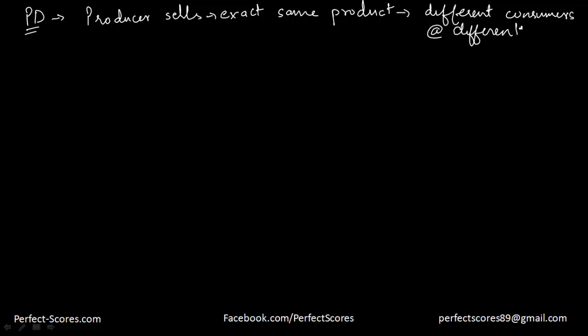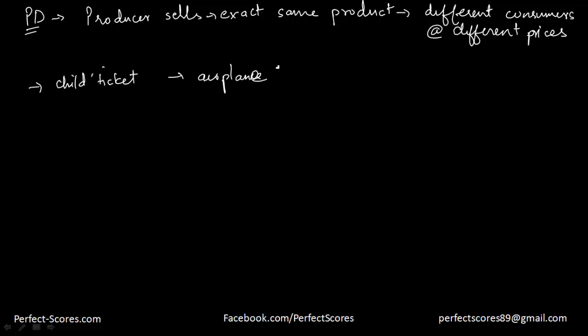You must be thinking: how is the producer able to convince different consumers to buy the same product at different prices? For example, a child's ticket on an airplane costs less compared to an adult ticket. This is what we call price discrimination.